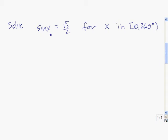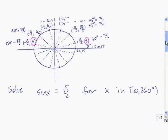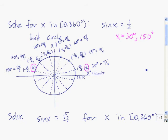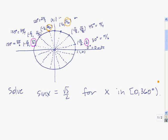Here we're looking for x where sine of x is equal to root 3 over 2, so we're looking for the angles such that the sine is root 3 over 2. That means the y-coordinate on the unit circle is root 3 over 2. One spot is right here, so x equals 60 degrees is a solution. The other place where the sine is equal to root 3 over 2 is right here, and that's at 120 degrees. So the two solutions are x equals 60 degrees and x equals 120 degrees.